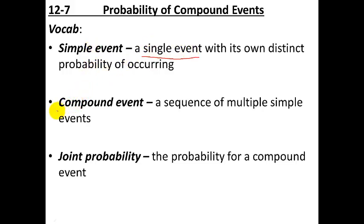Then more complicated would be a compound event, which is a sequence of multiple simple events. Lots of different things are happening, and it's compounded because you might need both of them to happen, or one or the other, or first the first event and then the second event. So it could be that the order matters, or both, or neither.